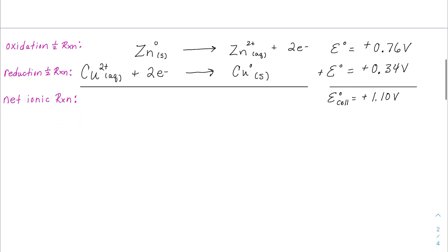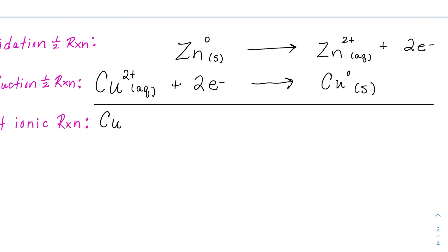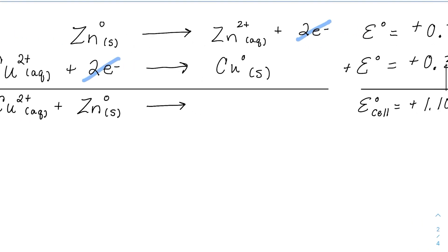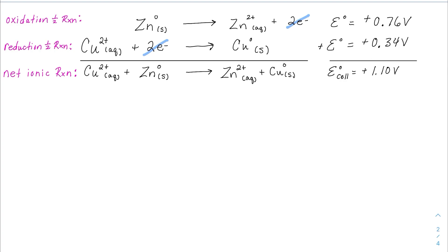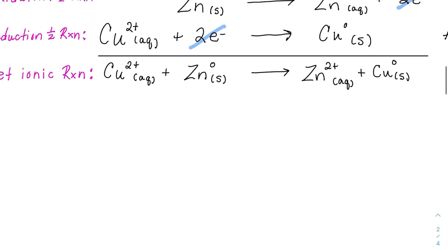Let's write the overall net ionic equation and talk through what's happening. Copper two-plus ions in aqueous form are going to take in two electrons produced from the zinc. The zinc in a zero oxidation state as a solid turns into zinc ions in solution, and copper solid at zero oxidation state is created. That's the overall chemical reaction in words. Now let's start labeling everything, and then we'll get to the particulate model.